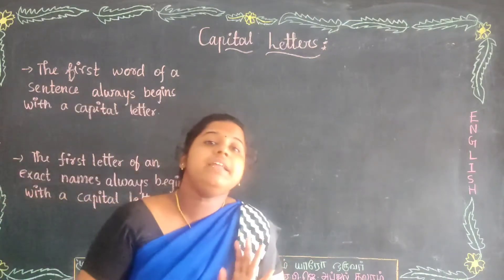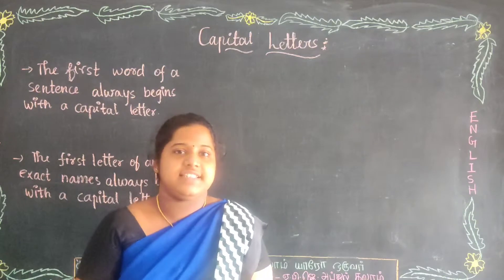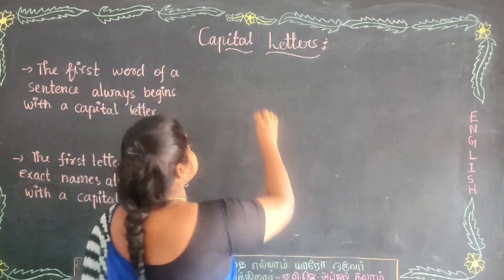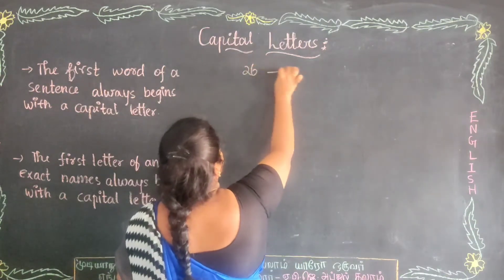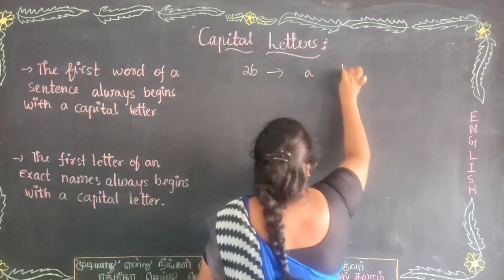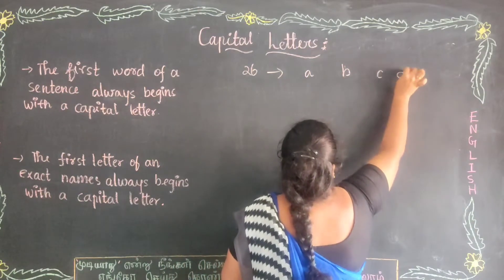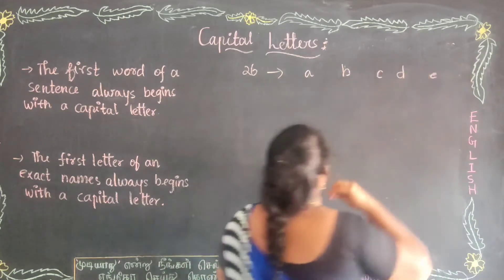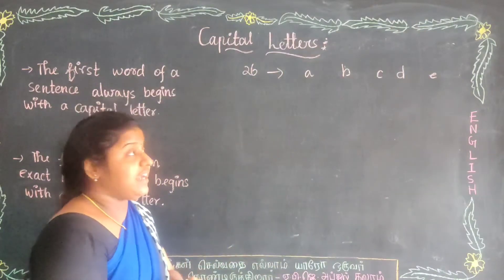Now tell me, how many letters are there in English? Yes, there are 26 letters in the alphabet. See here: A, B, C, D, E. These are all English alphabets.